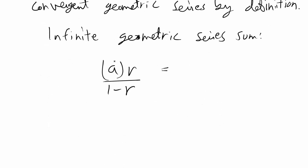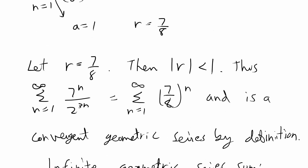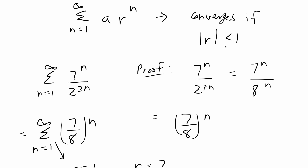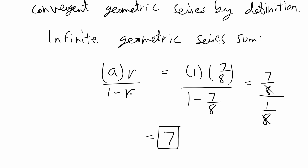In our case, we don't have a constant coefficient, so a is just 1. We have r equal to 7 over 8. In the denominator we have 1 minus 7 over 8, which gives us 7 over 8 over 1 over 8, which equals 7. So for this problem, we proved that the infinite series is convergent by identifying it as an infinite geometric series where the absolute value of r is less than 1, and then we used the formula a times r over 1 minus r to find that the sum is equal to 7.